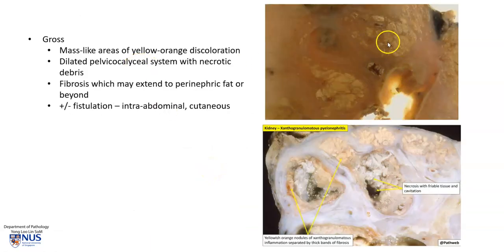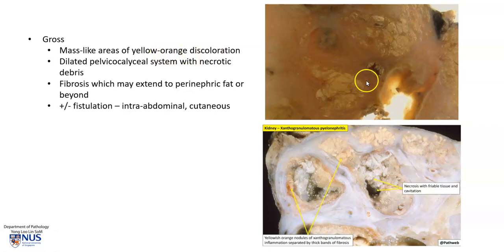Grossly, there are mass-like areas of yellow to orange discoloration, and as mentioned earlier, these can be mistaken for tumors on imaging. There is a dilated pelvicalyceal system with necrotic debris and there may also be fibrosis.